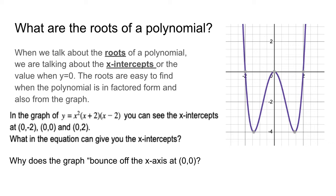So the next question we want to answer about graphs and their equations is why does this graph bounce off of the x-axis at (0, 0). Notice at (0, 0) it doesn't go through the x-axis but kind of bounces off. So that's what we're going to look at next.